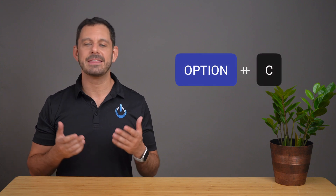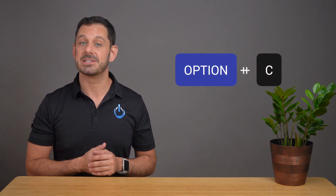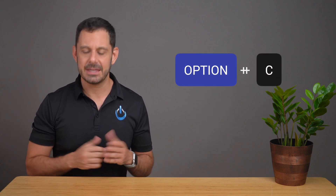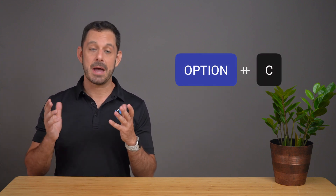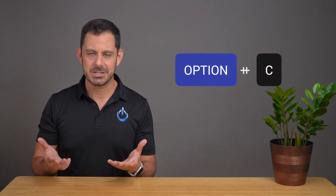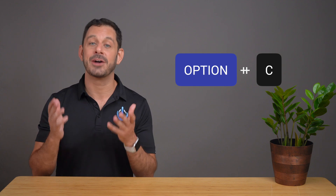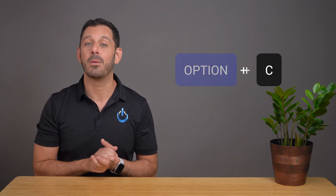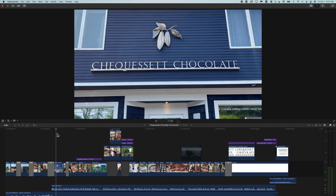The shortcut to add a caption is Option and the letter C as in Charlie. Thinkific students, my apologies — I forgot to include that shortcut on your PDF guide. Please add that one manually.